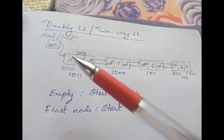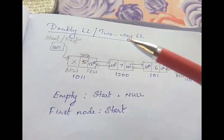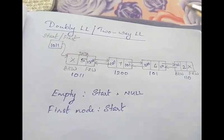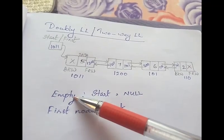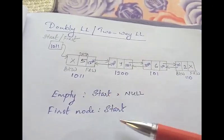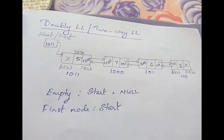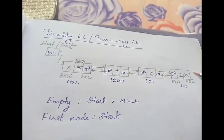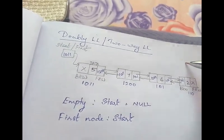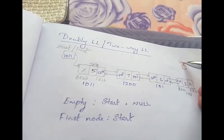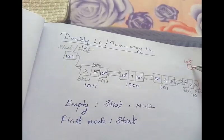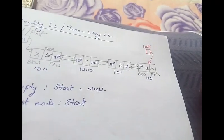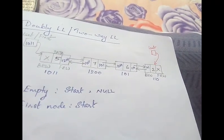An empty doubly linked list means start equals null. The first node is start itself. If we want to traverse backwards, we can also maintain a 'last' pointer which points to the last node in the doubly linked list.